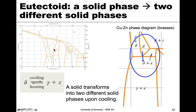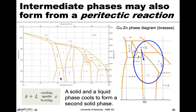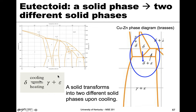We've talked about eutectic phase diagrams and the eutectic reaction. However, there's also something called a eutectoid. The difference in terminology is that instead of a liquid going to two solids, we have a solid going to two other solids. So eutectoid means that we have a solid phase at high temperature and two other solid phases at low temperature.